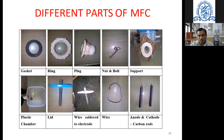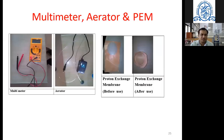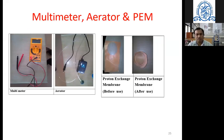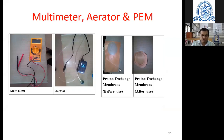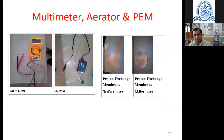These are actual photographs of the MFC components and the assembled laboratory-based microbial fuel cell. I used a simple digital multimeter for measuring different parameters. An aerator — a simple fish aerator — was used to add oxygen or air to the cathode chamber. The proton exchange membrane is shown before and after use; the after picture shows fouling by bacteria.